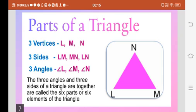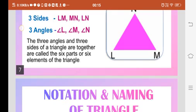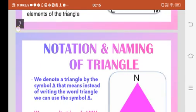The same way, a triangle has three angles: angle L, angle M, and angle N. And all three angles and three sides of a triangle are together called six parts or six elements of the triangle.